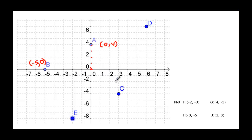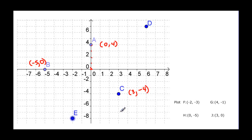For point C, we get to move in both directions. We go over until we're right above it, and that looks like three, so that's the x coordinate. Then we go down four units — because we went down it's a negative number — so that ordered pair is (3, -4).